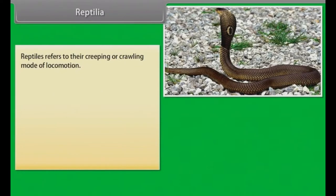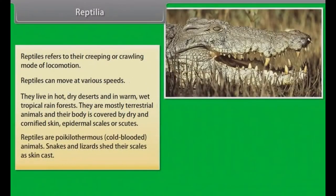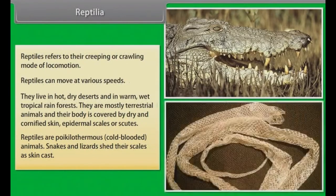Reptiles refer to their creeping or crawling mode of locomotion and can move at various speeds. They live in hot, dry deserts and in warm, wet tropical rainforests. They are mostly terrestrial animals and their body is covered by dry and cornified skin; epidermal scales are called scutes. Reptiles are poikilothermous or cold-blooded animals. Snakes and lizards shed their scales as skin casts.